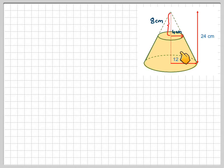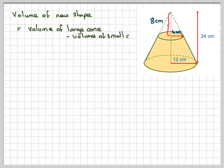Now to find the volume of this shape here, all you need to do is find the volume of the big cone and take away the volume of the small cone. So the volume of the new shape, which is called the frustum, is the volume of the large cone minus the volume of the small cone.